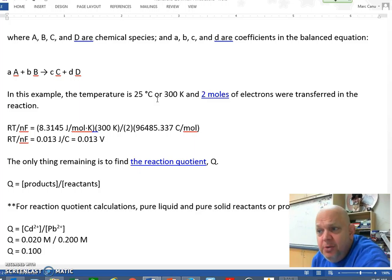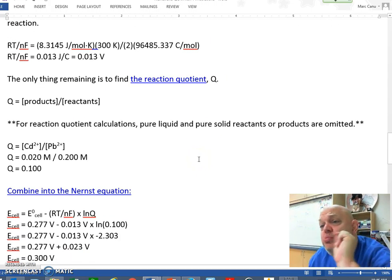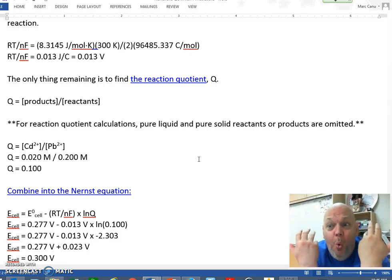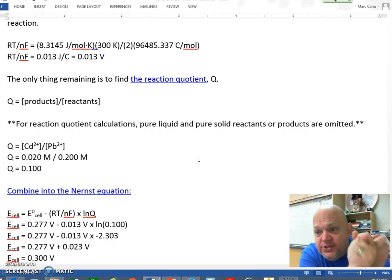So now last piece of information we need is the reaction quotient, the Q, which is products over reactants. We already went over that, so we got 0.02 molar for the cadmium divided by 0.2 molar for the lead. Divide that and our Q is 0.1. Yes! So now we've got all the pieces of information. We've got the E of the standard cell, we have the RT divided by NF as 0.013 volts, and we have Q which is 0.1.